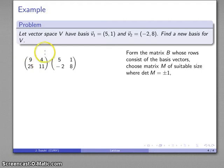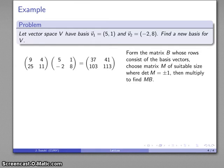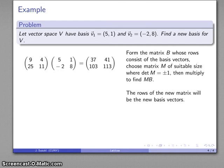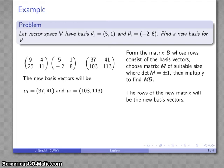And so my product is going to be my new basis: (37,41) and (103,113). This gives me my new set of basis vectors, which will be the rows of the product matrix: (37,41) and (103,113).